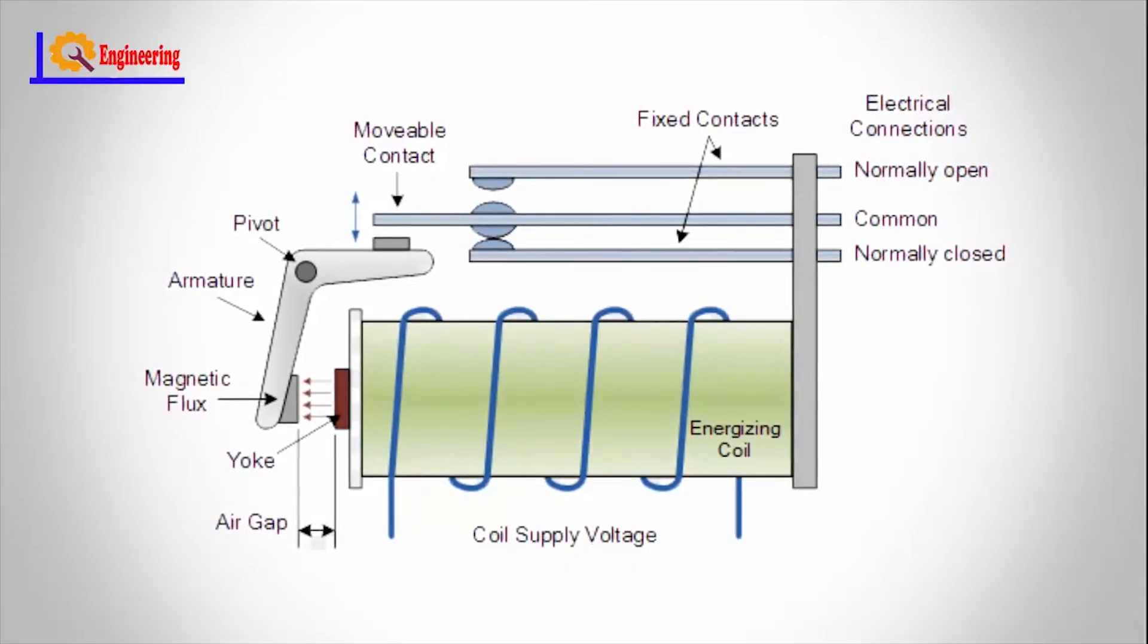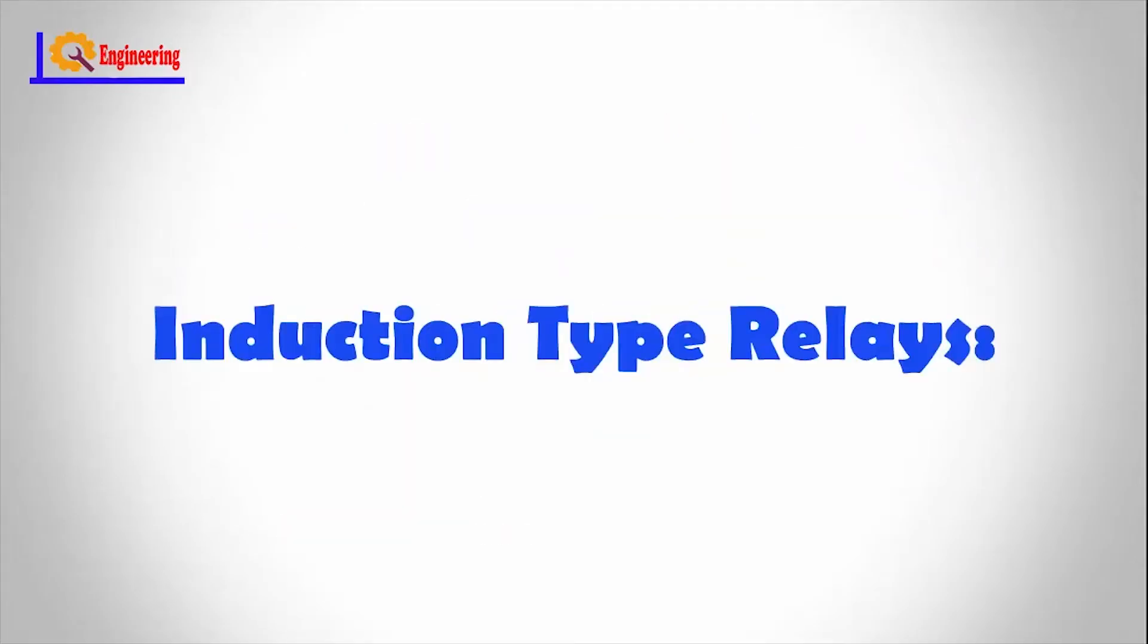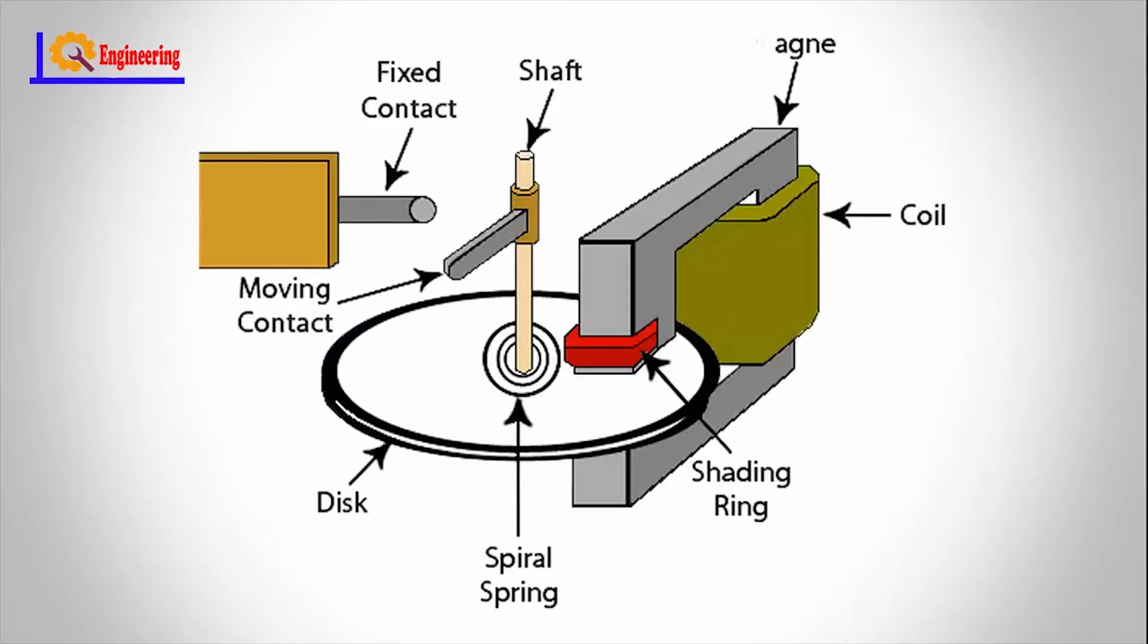Induction type relays: these are used as protective relays in AC systems alone and are not usable with DC systems. The actuating force for contact movement is developed by a moving conductor that may be a disc or a cup through the interaction of electromagnetic fluxes due to fault currents. These are of several types like shaded pole, watt-hour, and induction cup structures, and are mostly used as directional relays in power system protection and also for high-speed switching operation applications.